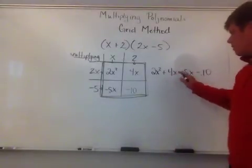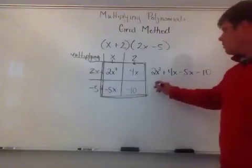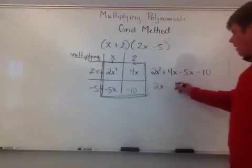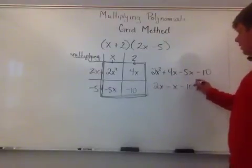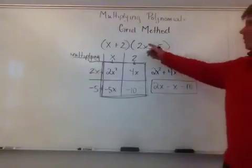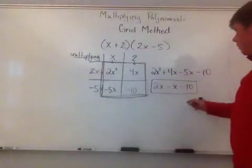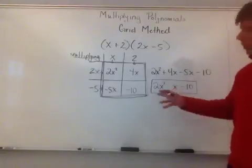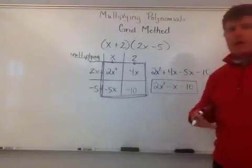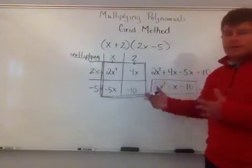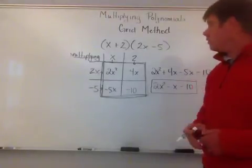And to combine my like terms, I have positive 4 and negative 5x. So I've got 2x squared minus x minus 10. And then my final answer of this polynomial multiplied is going to be 2x squared, sorry, I forgot my squared, 2x squared minus x minus 10. And that's the final answer. So that's the grid method. So that's just another method for you to use.